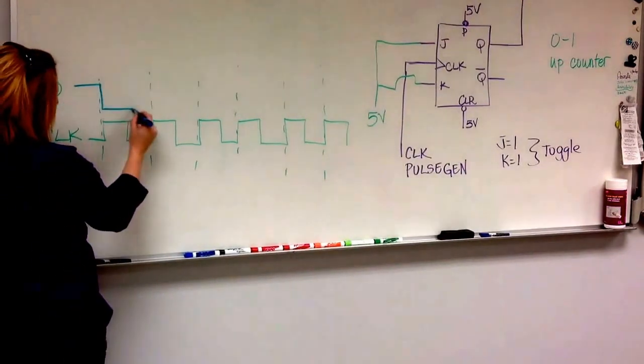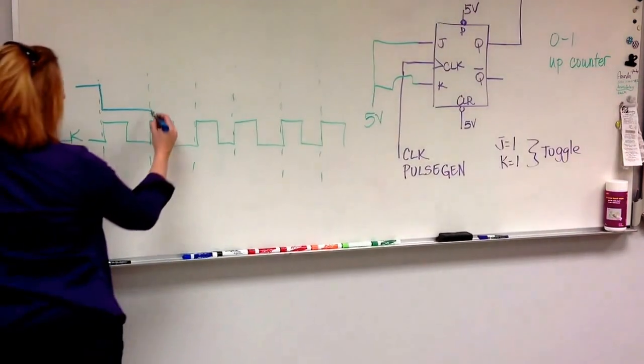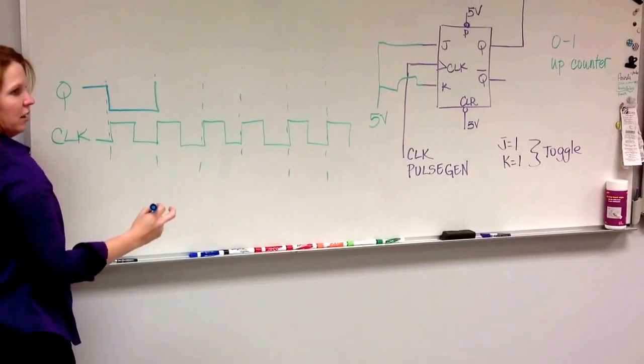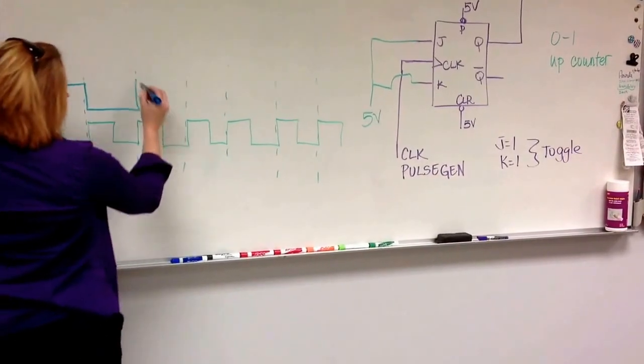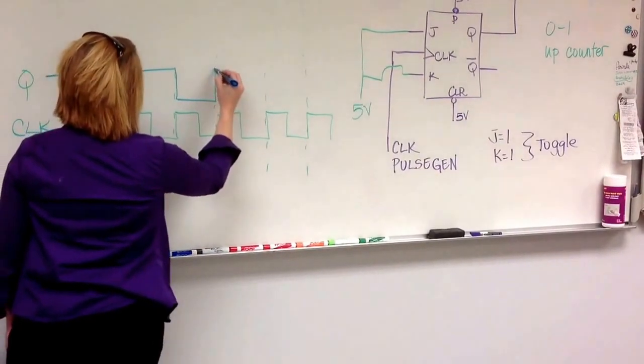And again, it's going to move straight across until it gets to the rising edge. J and K are still 1, so it's still in the toggle state, so it will change back to 1. And this continues to happen over and over.